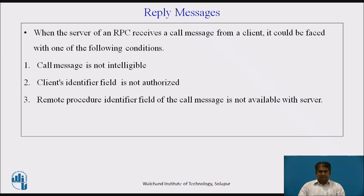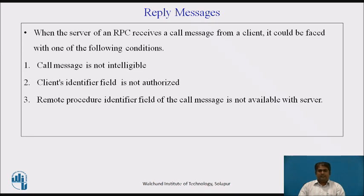When the server of an RPC receives a call message from a client, it could be faced with the following conditions. The first condition is that the server finds the call message is not intelligible to it, which may happen when a call message violates the RPC protocols. The server will reject the call without attempting to execute the procedure. The second condition is the server detects, by scanning the client's identifier field, that the client is not authorized to use the service. The server will return an unsuccessful reply message without attempting to execute the procedure.